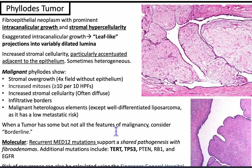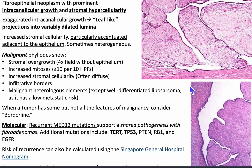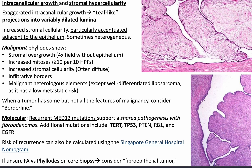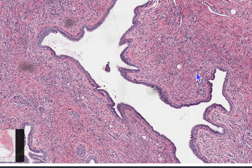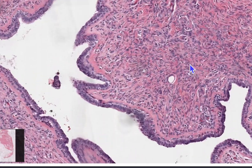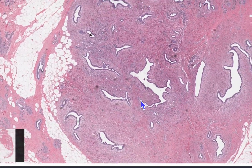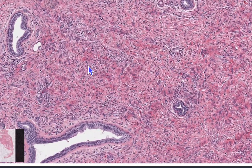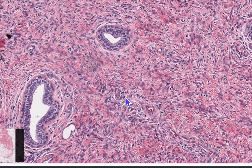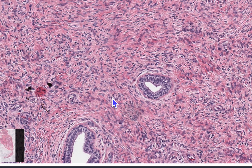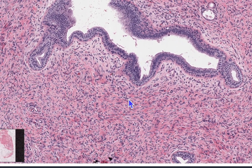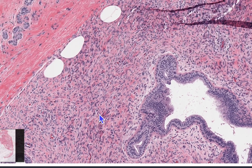When a tumor has some but not all features of malignancy — apart from malignant heterologous elements — consider borderline. Molecularly, there are recurrent MED12 mutations, supporting a shared pathogenesis with fibroadenomas. Additional mutations include TERT, TP53, PTEN, retinoblastoma 1, and EGFR. This case of phylloides tumor doesn't necessarily have great leaf-like architecture, but you can appreciate the stromal cellularity. The mitoses per high power field were fewer than five, so this is likely benign or borderline.